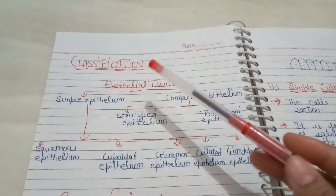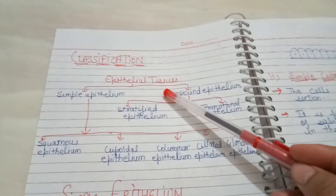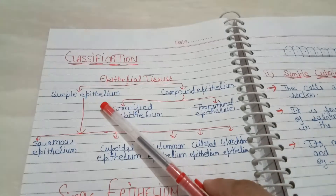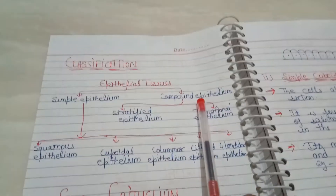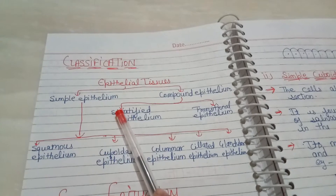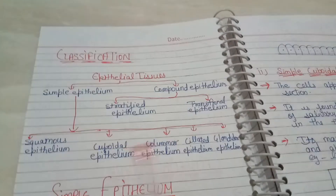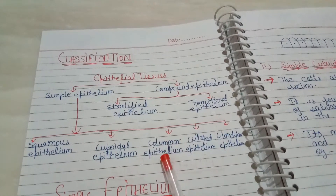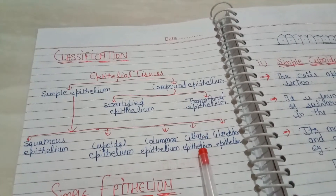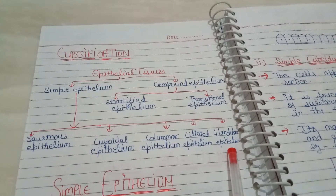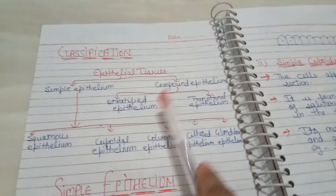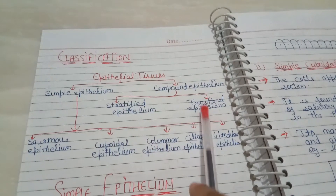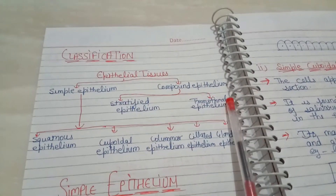Now we discuss about classification of epithelium tissue. Epithelium tissue has two types: one is simple epithelium tissue, and second is compound epithelium. Simple epithelium is divided into five types: squamous epithelium, cuboidal epithelium, columnar, ciliated epithelium, and glandular epithelium. Compound epithelium has two types: stratified epithelium and transitional epithelium.